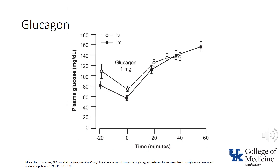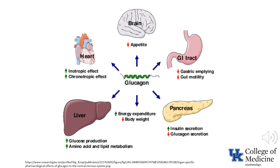This graph demonstrates the efficacy of both IM and IV glucagon in treating hypoglycemia. Note that glucagon is administered at time 0. It is obviously effective very shortly after administration, whether given IM, IV, or sub-Q, so it's a reasonable approach for a patient with severe hypoglycemia who does not have vascular access. Recognize that glucagon has effects other than simply increasing the patient's blood glucose. A patient with coronary artery disease might not tolerate the increase in myocardial oxygen demand that occurs as a result of the increase in heart rate and contractility following glucagon administration.